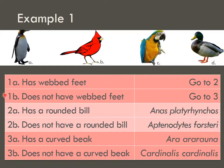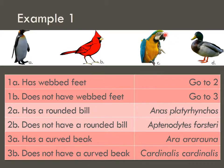We go to our first set of descriptions. It either has webbed feet or does not have webbed feet. Our unknown does not have webbed feet. If we follow the key, 'does not have webbed feet' says go to three. So we jump down to description three. Description three says 'has a curved beak' or 'does not have a curved beak.' If I go back up here to my unknown, I can see that it does have a curved beak.